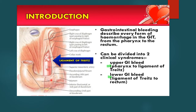Upper GI bleed was covered adequately in the last lecture. Today we shall talk about the lower GI bleed, which is bleeding from the DJ flexure right to the anorectal region, consisting of the small intestine, large intestine, rectum, and anorectal region.